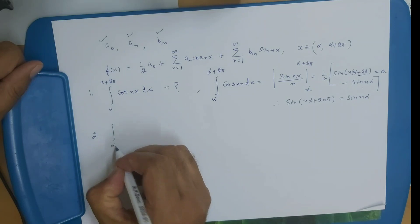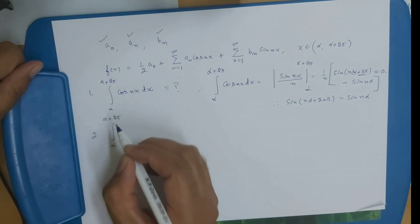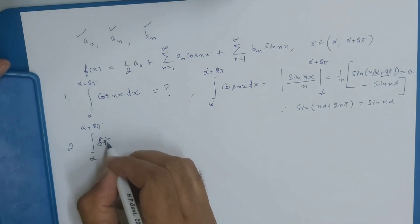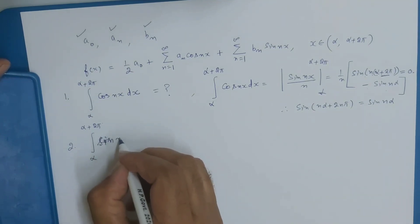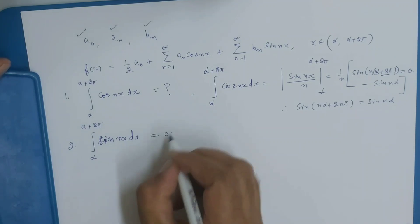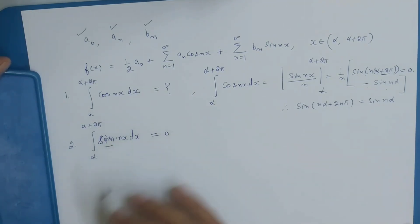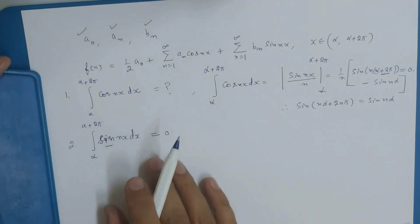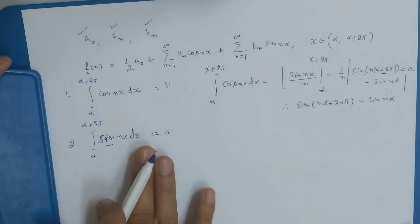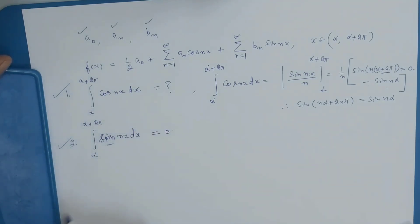Similarly, formula number 2: ∫[α to α+2π] sin(nx) dx = 0. The integration of sin is −cos; cos is again a periodic function, so that should also equal 0. यह भी 0 होता है।